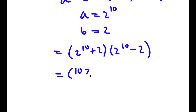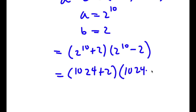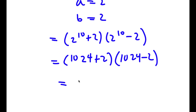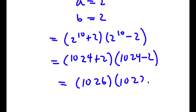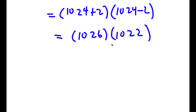Now 2 to the power of 10 is 1024, so I have 1024 plus 2 times 1024 minus 2, which is 1026 times 1022. If we try to multiply these terms as is, it's going to take really long and be very easy to make mistakes.